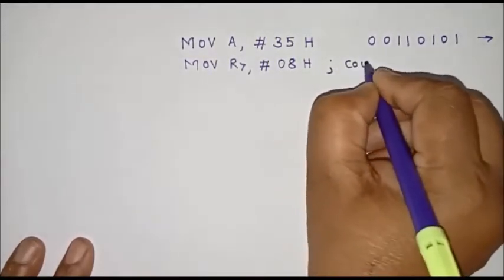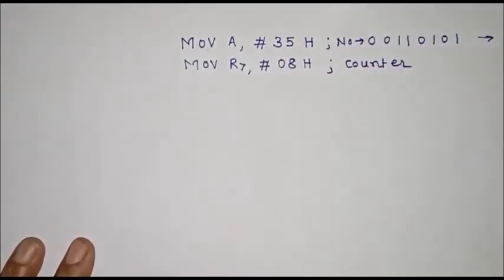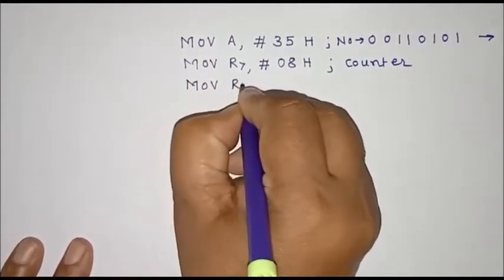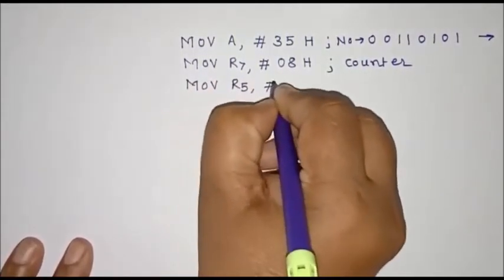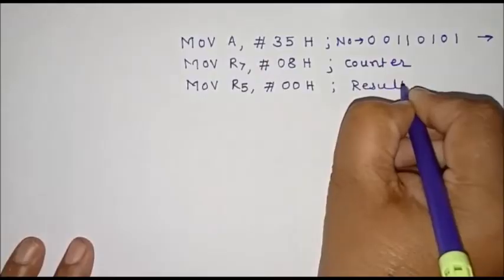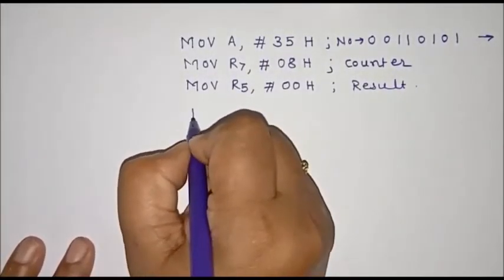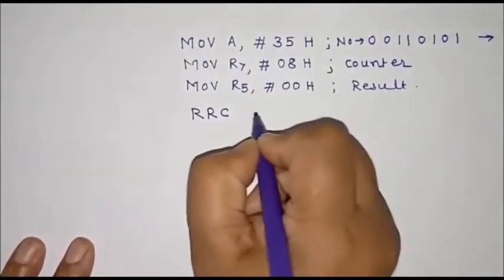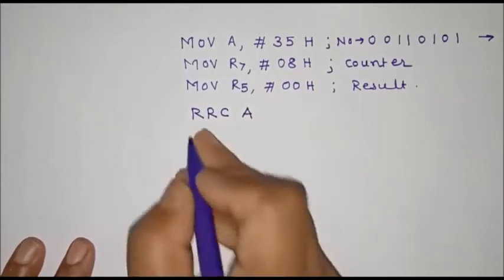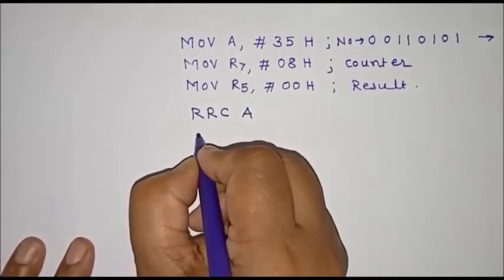We'll initialize R7 with 08H — this is used as a counter. The result will be stored in R5 register, so R5 should be initialized with value 00H — this is the result register. Then we can use any operation: rotate left or rotate right. I'll use the RRC operation — rotate accumulator right with carry. After this operation we'll check the carry flag.